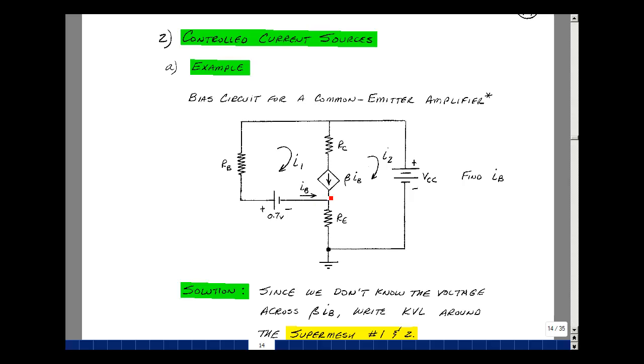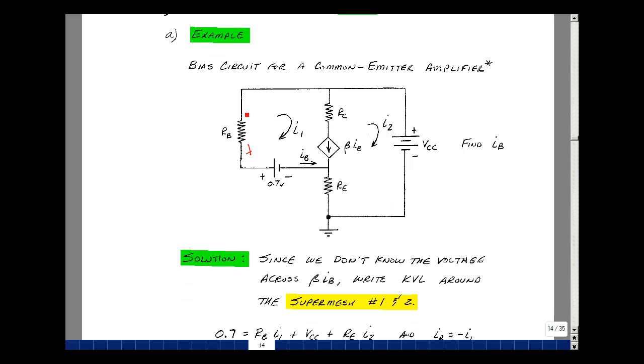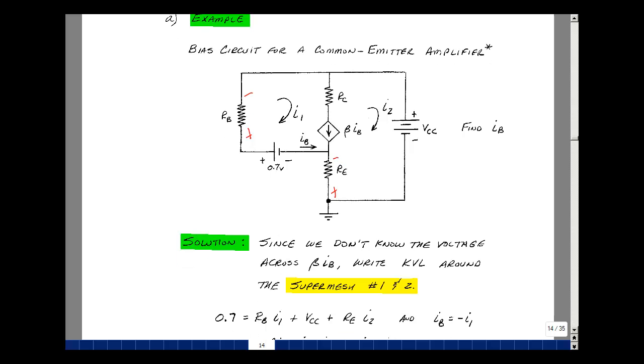Since I can't do the source transformation, let me do a super mesh. Let me go around this outer mesh. Let's not go around this one, but go around the outside of it because I have only voltage sources and resistances. I'm going to assign my drops across the resistors this way, in a clockwise direction. So let's just start here. The rise in voltage is 0.7. The drop is Rb times I1. And then I've got a drop of V sub CC. And then I've got a drop of Re times the current I2.